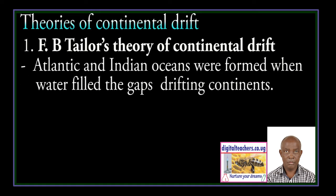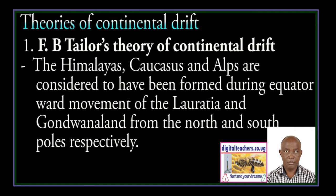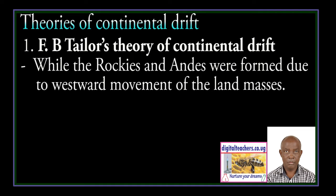The Atlantic and Indian Oceans were formed when water filled the gaps between the drifting continents. Taylor assumed that the land masses began to move in an arc form while drifting through zones of lesser resistance. Thus, mountainous and island arcs were formed in the frontal part of the moving lobes. The Himalayas, Caucasus, and the Alps were considered to have been formed during the equatorial movement of Laurasia and Gondwanaland from the North and South Pole respectively, while the Rockies and Andes were formed due to the westward movement of the land masses.